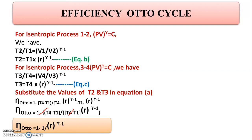Where R is the compression ratio and gamma is the isentropic index. Always remember that efficiency of the Otto Cycle depends upon compression ratio — as compression ratio increases, efficiency also increases. However, compression ratio cannot be increased beyond a certain limit, as it leads to abnormal combustion and noise. For petrol engines using the Otto Cycle, the compression ratio is generally taken up to 12.